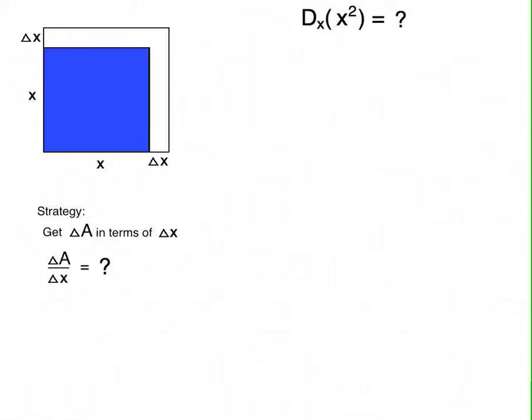Once we've done that, we'll figure out the average rate of change, how delta A, the change in A, compares to delta x. And then finally, we take the limit as delta x approaches zero. And the average rate of change in the limit is the derivative, the thing we're looking for, because A is x squared.